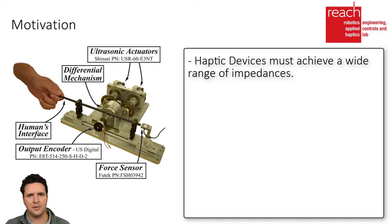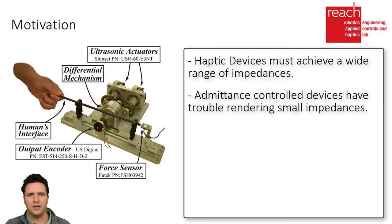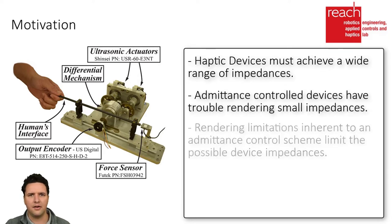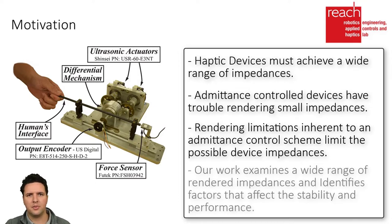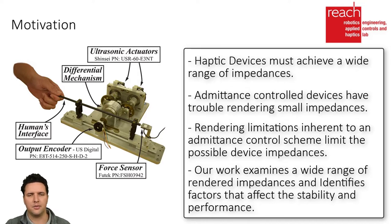This control topology typically renders large impedances easily, but has trouble rendering small impedances. Stability behavior is inherent to an admittance control architecture and limits the range of stable impedances a device can achieve. This work examines the stability and rendering limitations of admittance-type haptic devices under a wider set of virtual admittances than previously examined, and identifies factors affecting the stability and rendering performance.